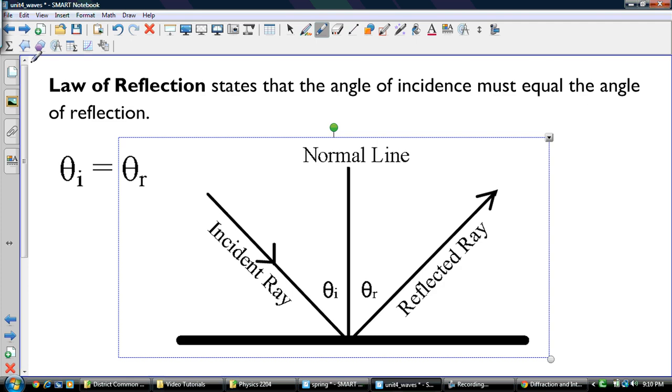The law of reflection. So this is something we talked about here. The law of reflection states that the angle of incidence must equal the angle of reflection. So here's the incident ray coming in, and here's the reflected ray coming out. So this is the normal line. These two angles are equal.